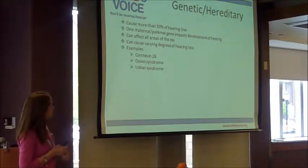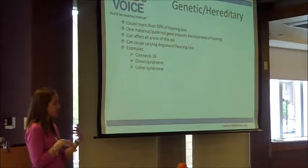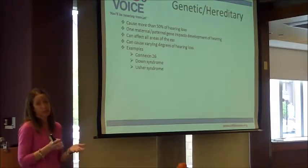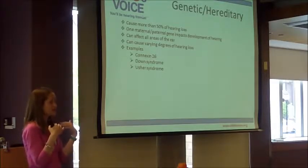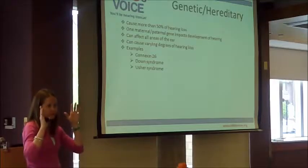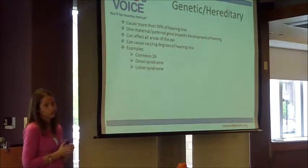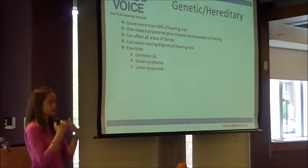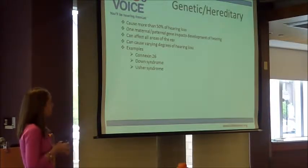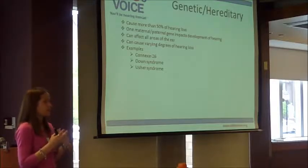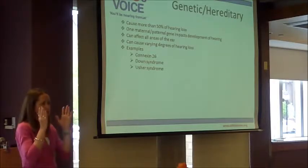Down syndrome and Usher syndrome can also cause hearing loss. With Usher syndrome, the child has a hearing loss but also has a progressive vision loss. These kids start with perfect vision, have the hearing loss, and then as time goes on they might lose peripheral vision, develop night vision issues, and unfortunately eventually go totally blind. We've had children at Child's Voice with Usher syndrome in varying stages — the hearing loss is present immediately but the vision loss is progressive.